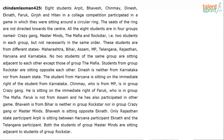Eight students — Arpit, Bhavesh, Chinmay, Dinesh, Eknath, Faruk, Girish, and Hiten — participated in a college competition game in which they were sitting around a circular ring. The seats of the ring are not directed towards the center. All eight students are in four groups named Crazy Gang, Masterminds, The Mafia, and Rockstar — two students in each group. These students are from different states: Maharashtra, Bihar, Assam, MP, Telangana, Rajasthan, Haryana, and Karnataka. No two students of the same group are sitting adjacent to each other except those of The Mafia. Students from the group Rockstar are sitting opposite to each other. Dinesh is neither from Karnataka nor from Assam.